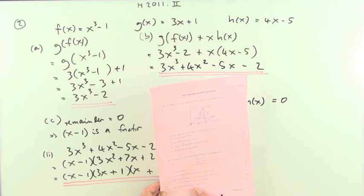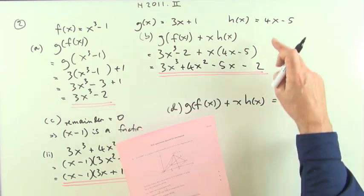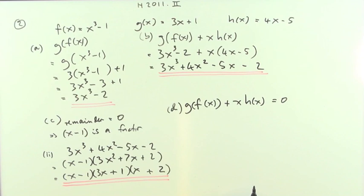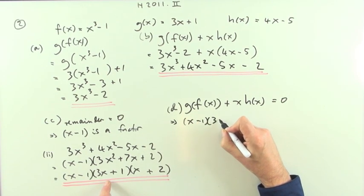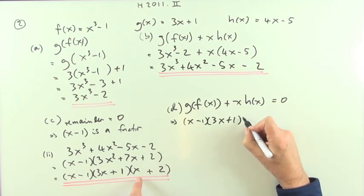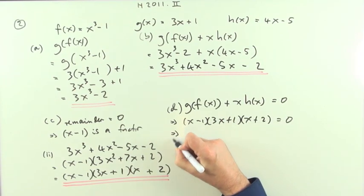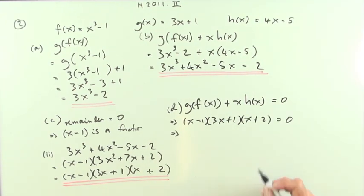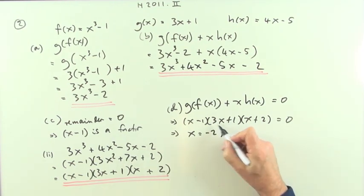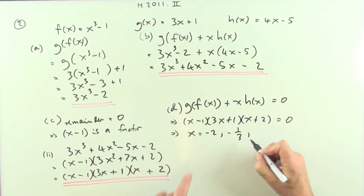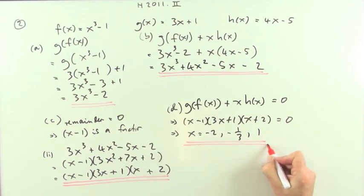Part d, hence solve g of f of x plus x times h of x, that was this thing here, equal to 0. Well that factorized to this, maybe I could put this down. That would mean that x minus 1 times 3x plus 1 times x plus 2 should equal to 0. So what have you got? Put them in order though, so I've got negative 2, or it could be negative a third, or it could be positive one. And that's it, that's all there was to question two. Bet you wish it was that the exam in 2011.